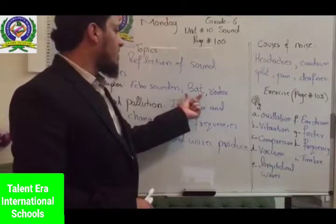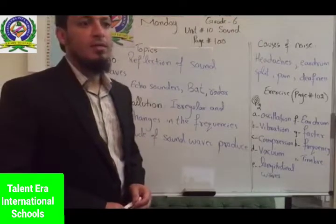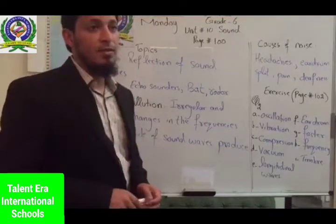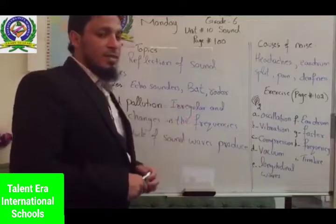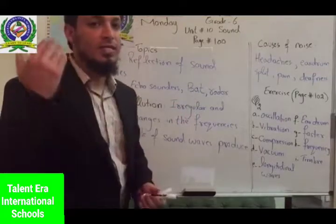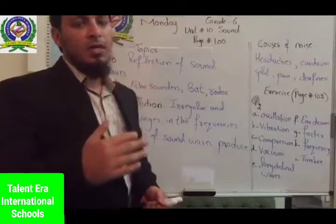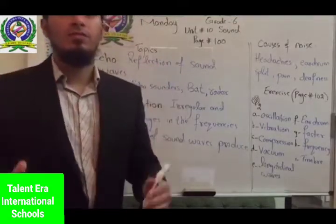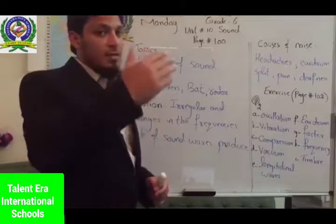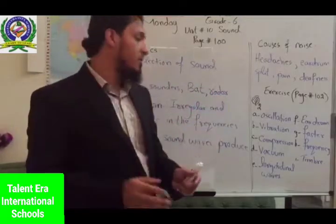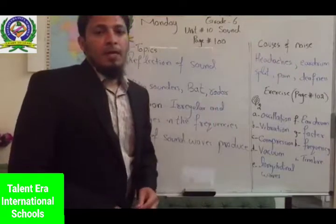Another example is the bat. The bat is an animal that has ears and eyes, but they cannot see clearly. So Allah subhanahu wa ta'ala gave them the property of very clear listening. They send signals in the form of sound, and when these sound waves strike a solid material and come back to their ears, they understand there is an obstacle in front of them and change direction.